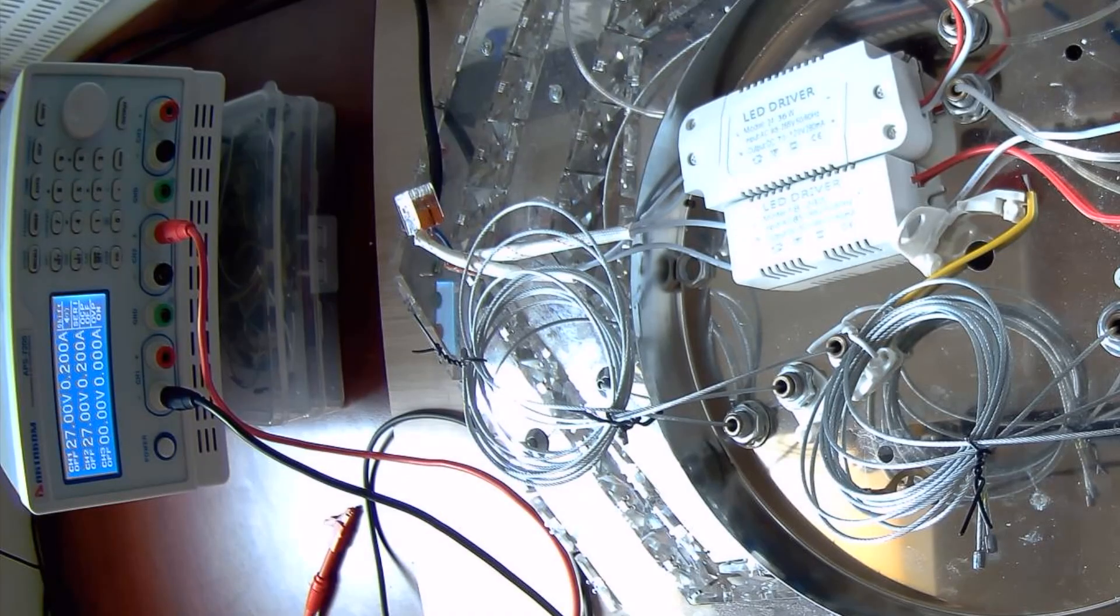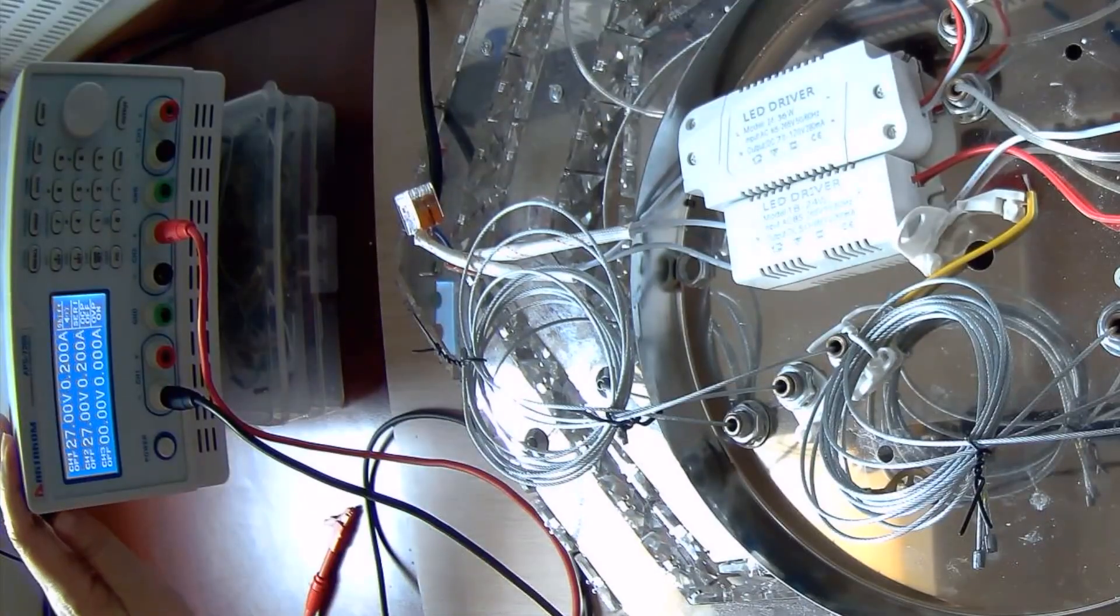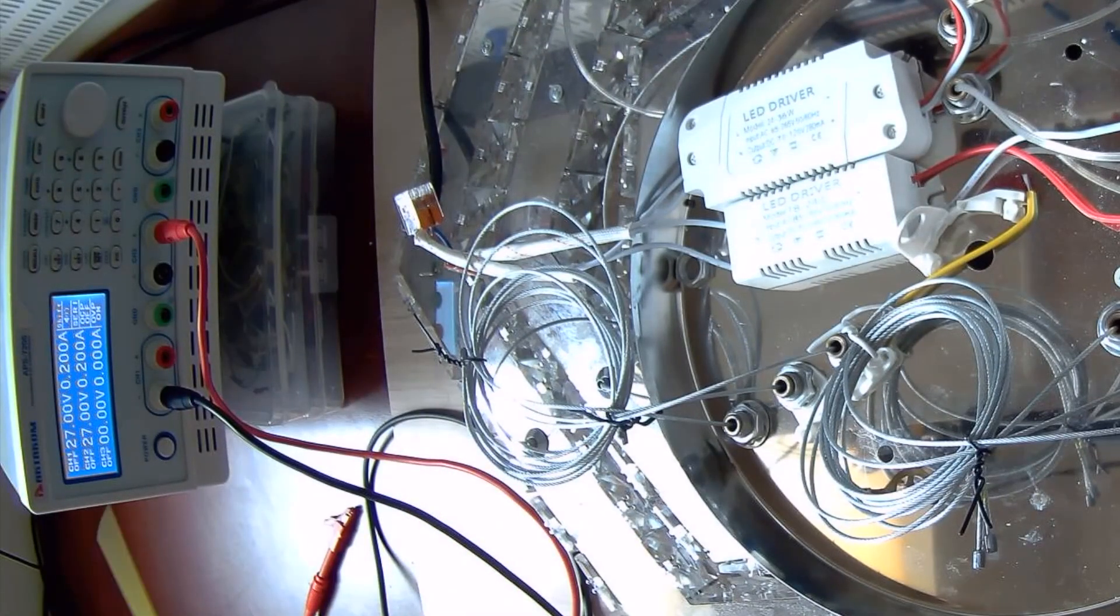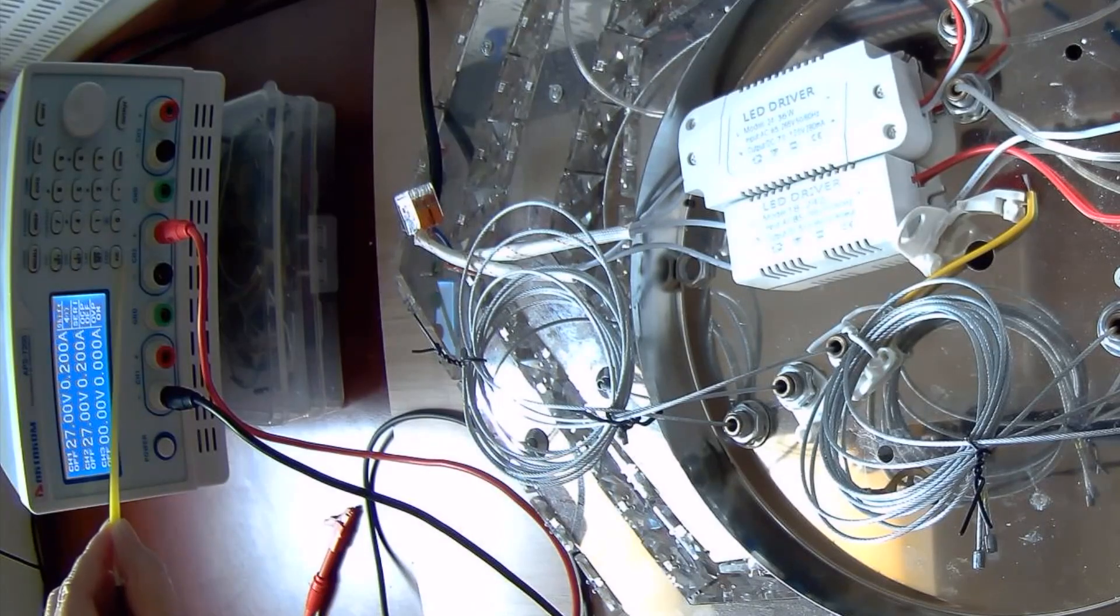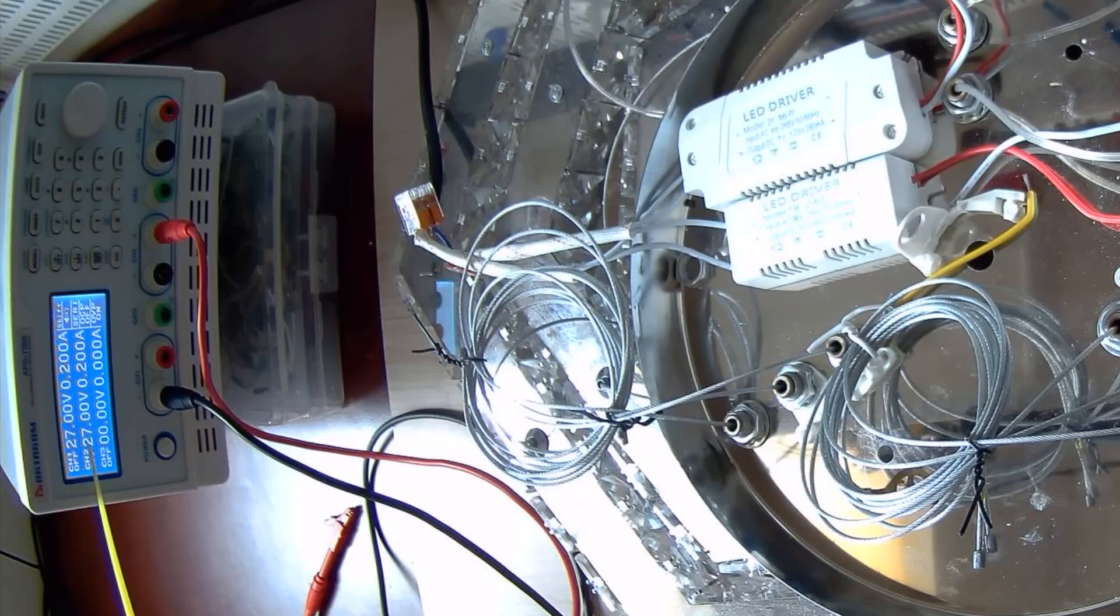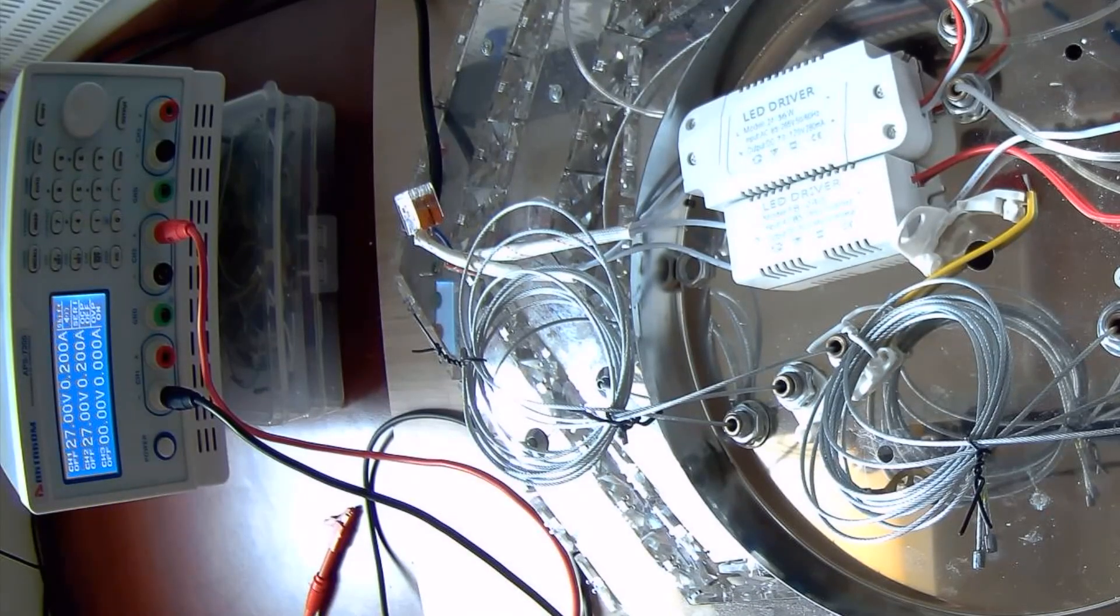To test the middle section of the LED chandelier, we will connect it to the Octopus APS7205 power supply. This power supply is very interesting. It has three channels, 30V each, and can combine the channels in series to produce a large DC voltage.